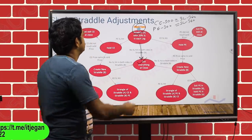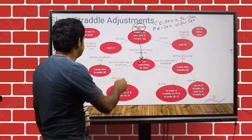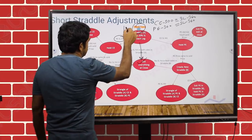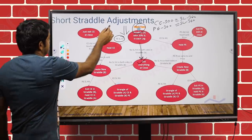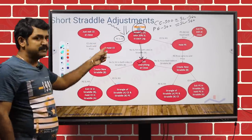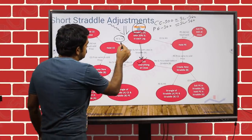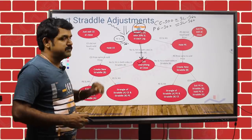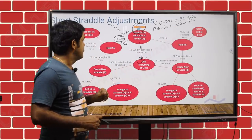Now suppose the market is coming down and your put stop loss is hit. The market is coming down, put stop loss is hit. So now you still hold the call. Put stop loss is hit — what was the stop loss? It was 360.